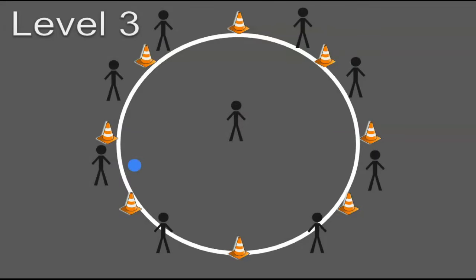Now Level 3 is different. In Level 3, we will add a person in the middle. This is one of the most fun levels because the person in the middle can actually get hit by the ball, and they can also dodge the ball. So if you do get hit by the ball, unfortunately, you have to swap your spot with the person who hit you.